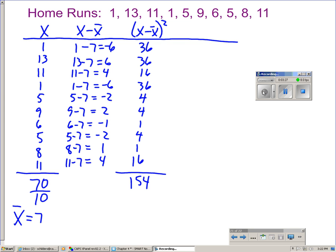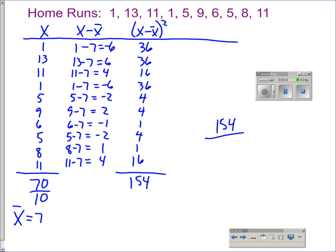To get the standard deviation, we take the sum of all the deviations and divide it by n minus 1. Since there are 10 data values, we're going to divide 154 by 9. That gives us 17.1. This number here is called the variance, and we call that s².